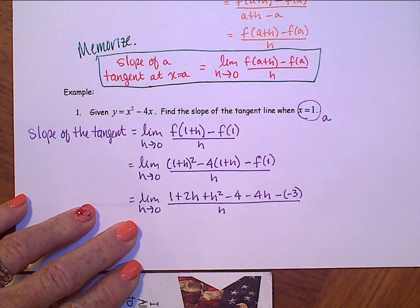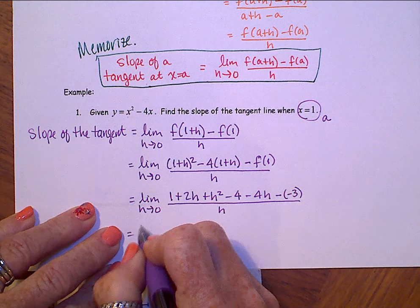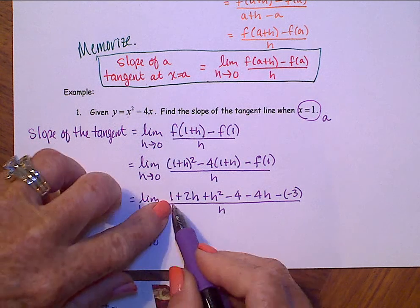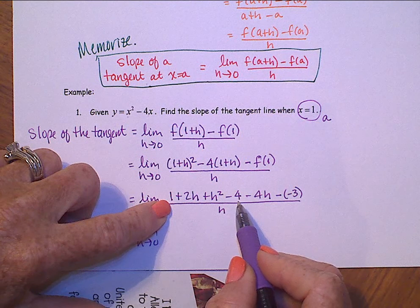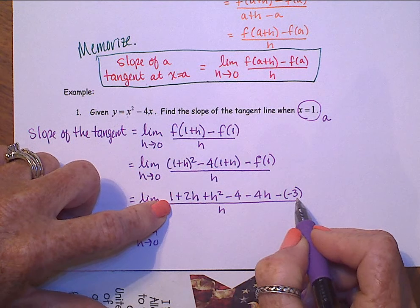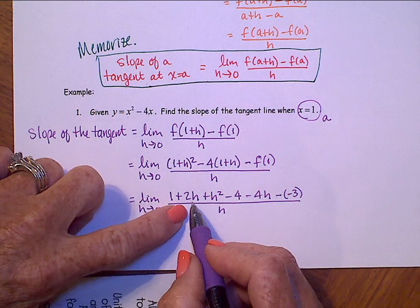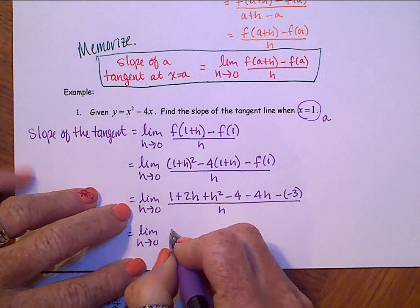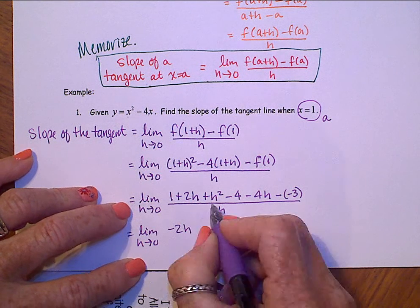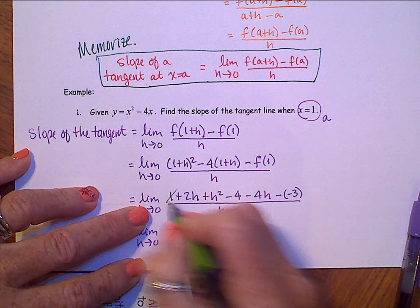All over h. Simplifying. Let's see, what do we see? 1 minus 4 is negative 3. And then this is plus a 3, so those constants all drop out.